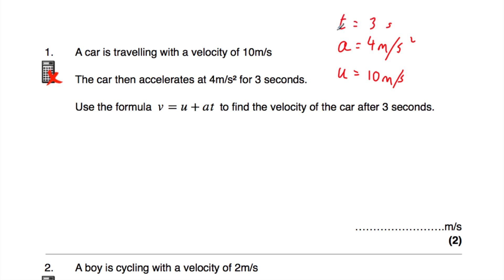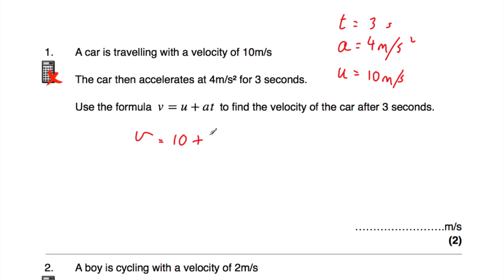So we've got t, we've got a and we've got u. And we want to find the velocity of the car after 3 seconds — in other words, the final velocity, which is v. So we can just substitute these into the formula: v is equal to u, which is 10, plus a, which is 4, multiplied by t, which is 3.